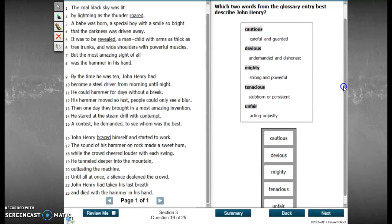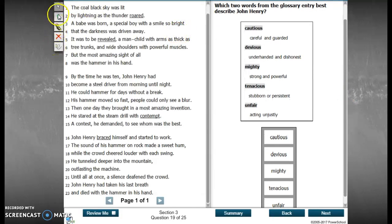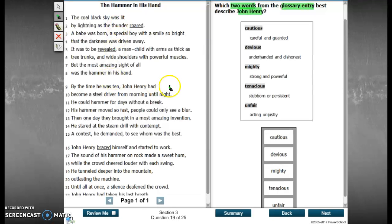Alright, so this is number 19. A lot of people missed this one. It is a TEI, which two words from the glossary entry best describe John Henry, which is who this poem was about.